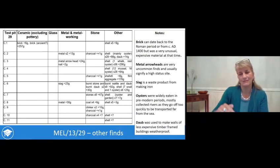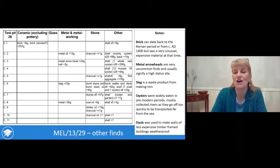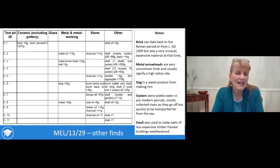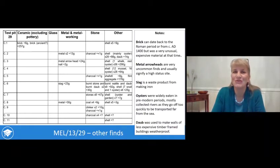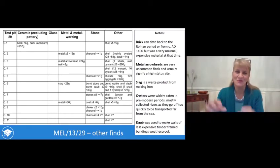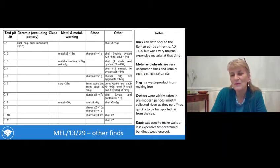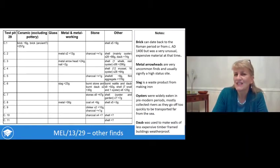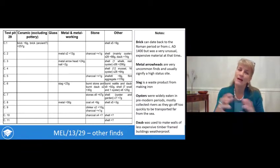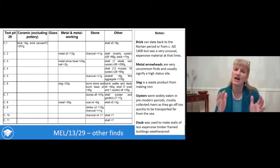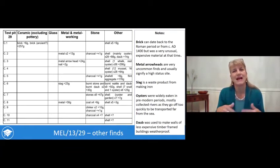The other finds, listed by context: starting with the oldest, we've got bits of charcoal and shell, signs of fires. Into the medieval period, there's quite a lot of oyster shell — very commonly eaten, freshwater oysters, as they're too far from the sea for saltwater oysters and things didn't move quickly in the medieval period. There's also burnt wattle and daub, used for plastering the walls of timber-framed houses — its burning suggests perhaps a timber building burnt down, or it was near a fireplace or used for an oven, possibly in a detached kitchen.